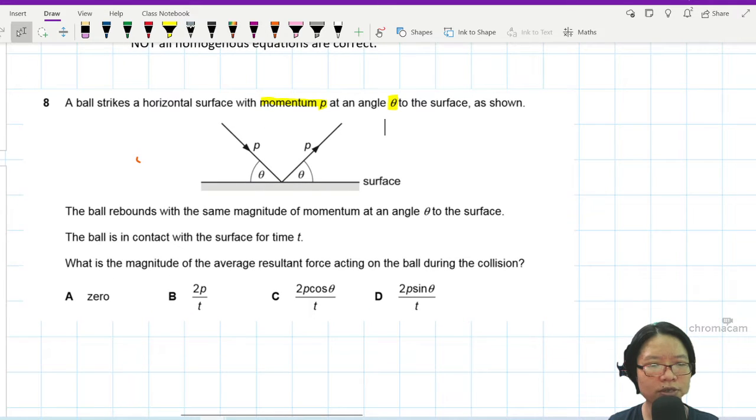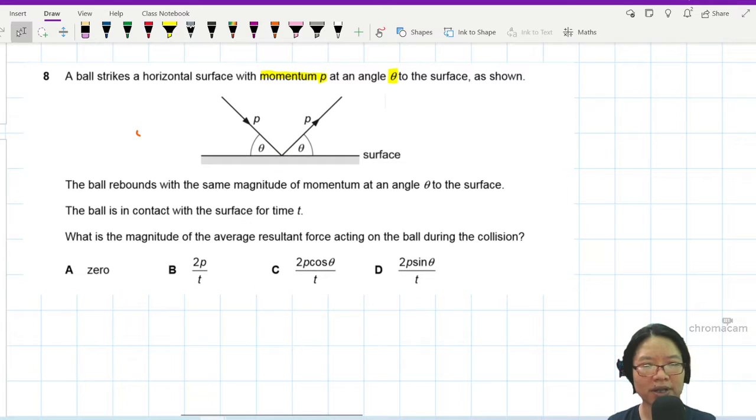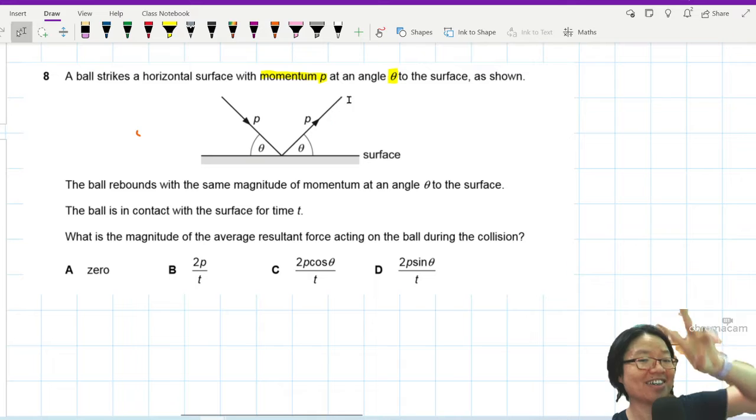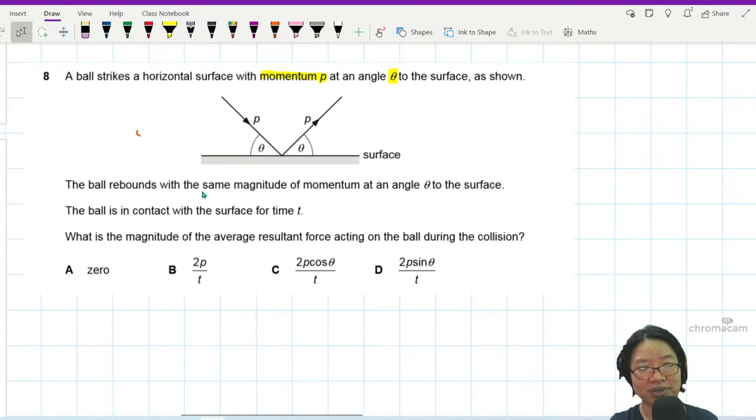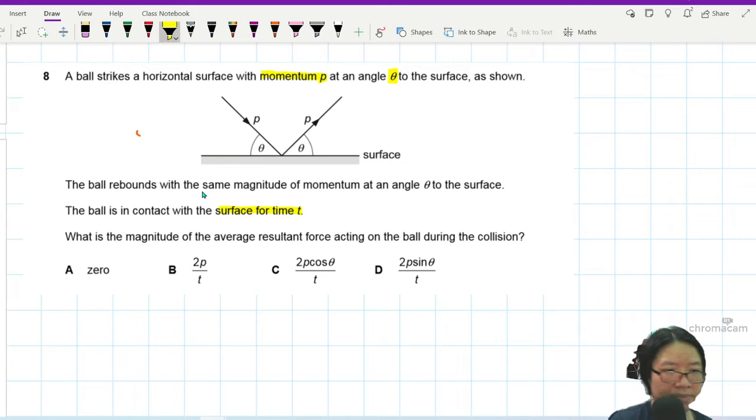The ball rebounds with the same magnitude of momentum at the same angle theta from the surface. So the ball is going to come here and reflect when it hits the surface. The ball is in contact with the surface for a time t. What is the magnitude of the average resultant force acting on the ball during the collision?